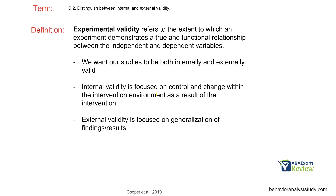Experimental validity is the extent to which an experiment demonstrates a true and functional relationship between the independent and dependent variables. With validity, what we're trying to establish is that we have control over behavior — there's a functional relationship between our intervention and the behavior change. We want our studies or interventions to be both internally and externally valid. As a BCBA, you're essentially researching whether your intervention is changing your client's behavior.